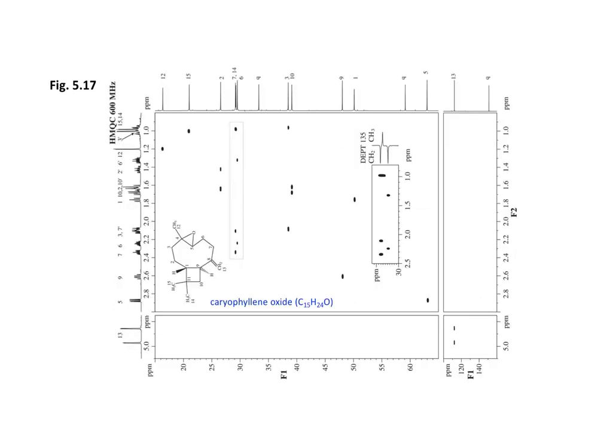This is the HMQC spectrum of caryophyllene oxide, which has 15 carbons and 24 protons. This compound gives quite a bit of complexity and overlap in the proton spectrum, and in the carbon spectrum there are also a few peaks that are fairly close together. In combination with a DEPT study, we can actually link all of the protons, including those that are buried in multiplets, with individual carbons. I won't take the time to work through this in the video, but will encourage you to take some time with this from the textbook spectrum.